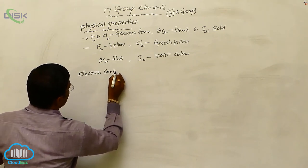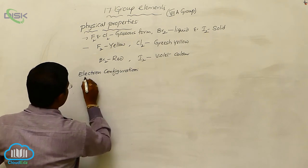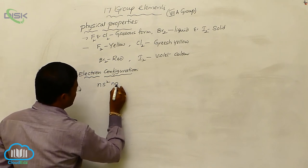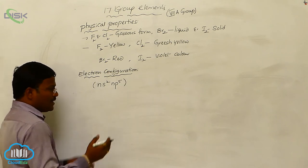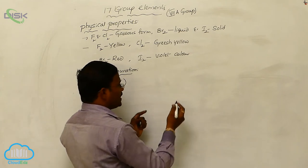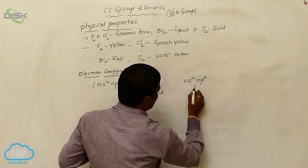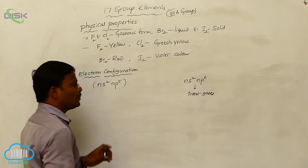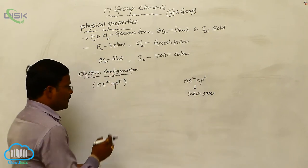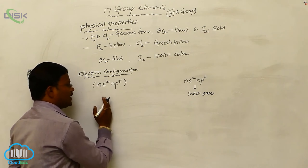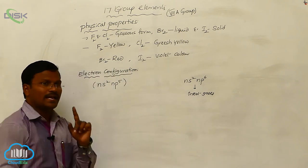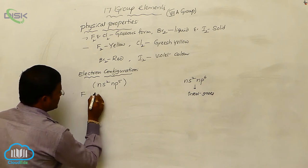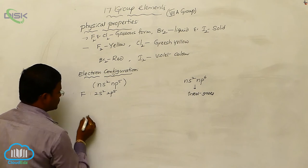All these elements belonging to the 17th group will have the general electron configuration denoted as NS² NP⁵. Let us compare this electron configuration of halogens with their nearest inert gases, which have the configuration NS² NP⁶. This is the electron configuration of noble gases or inert gases — the 8A group or zero group elements. When we compare the electron configuration of halogens and inert gases, there is only one electron difference.